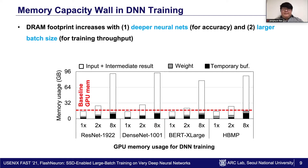Therefore, the memory usage for activations continues to increase as DNNs are becoming deeper to improve accuracy, and as we employ larger batch sizes to improve training throughput. As shown in the figure, this severely limits the space of trainable DNNs as memory usage exceeds the GPU memory capacity, also known as the memory capacity wall.